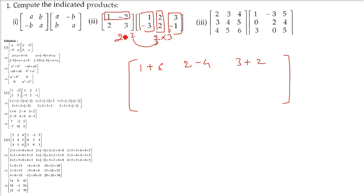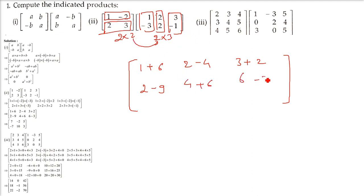Now the second row with all three columns: 2 into 1 plus 3 into minus 3 is minus 9. Then 2 into 2 is 4, 3 into 2 is 6. Then 2 into 3 is 6 and 3 into minus 1 is minus 3. What do you get? You get 7, minus 2, 5, then 2 minus 9 is negative 7, this is 10, this is 3.